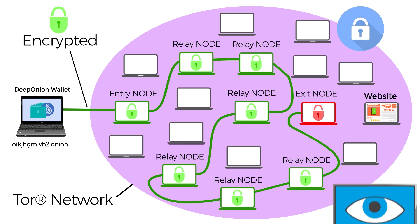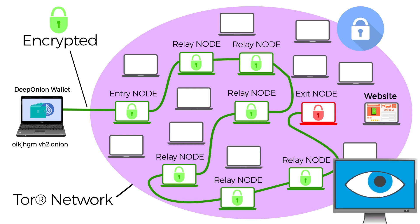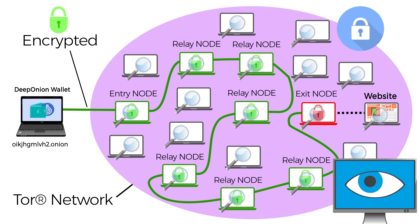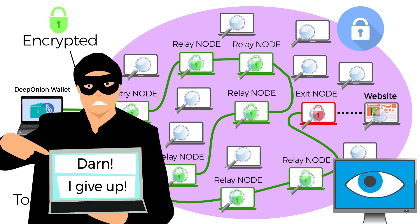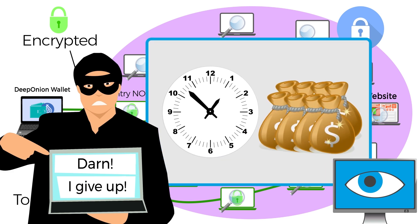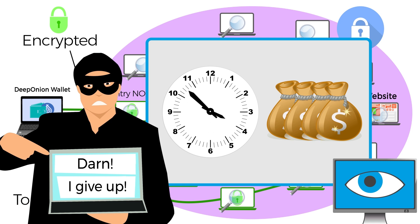If someone with bad intentions tries to analyze the connections from Tor, they would need to check all of the nodes and the records of the nodes. Since there are many nodes, it becomes very difficult to check and would require a significant amount of time and resources.